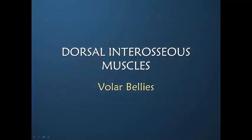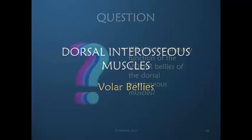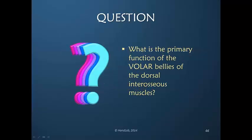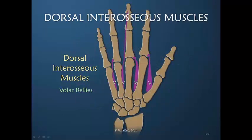We're still talking about the dorsal interosseous muscles, but let's look specifically at the volar bellies. Do you remember what we said was the primary function of the volar bellies of the dorsal interosseous? We did say that the dorsal bellies insert into the dorsal apparatus, so that means the volar bellies do not insert into the dorsal apparatus. Here's a schematic drawing that shows us the volar bellies of the dorsal interosseous muscles.